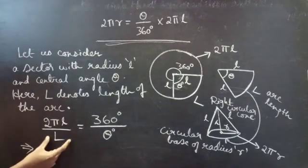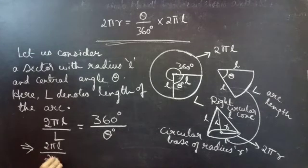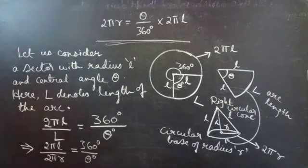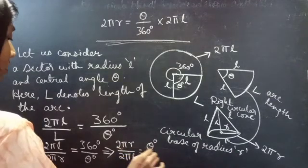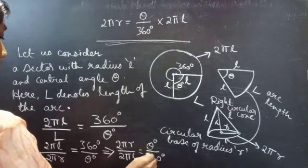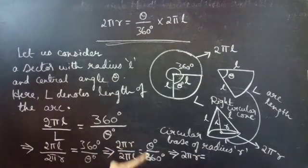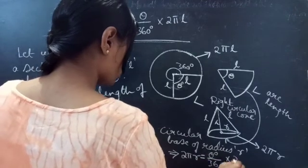Now we can replace the arc length L of the sector with the circumference of the circular base of the cone. So: 2πL by capital L equals 360 degrees by theta degrees. From this we can write: 2πR equals theta degrees divided by 360 degrees, into 2πL.